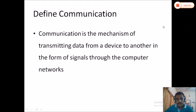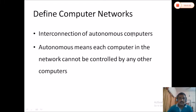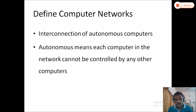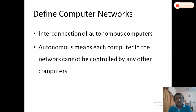Computer networks may be defined as the interconnection of autonomous computers. Autonomous computers means that in a network, we may have a number of computers, and every computer should be autonomous. Autonomous means a particular computer cannot be controlled by any other computer in the network — your computer should not be able to control another computer in the network. If a computer has such a feature, it can be called autonomous.